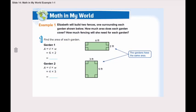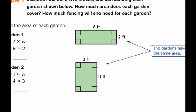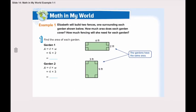Open page 805 and let's go through example number one together. Elizabeth will build two fences, one surrounding each garden, as shown below. How much area does each garden cover? So here we need to find the area of each garden. And how much fencing will she need for each garden? The fencing surrounds the garden, which means we need to find the perimeters.